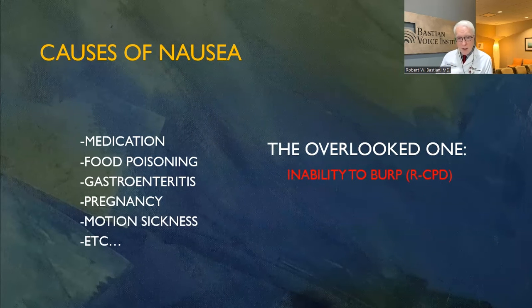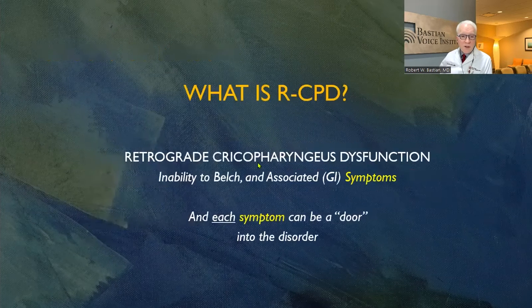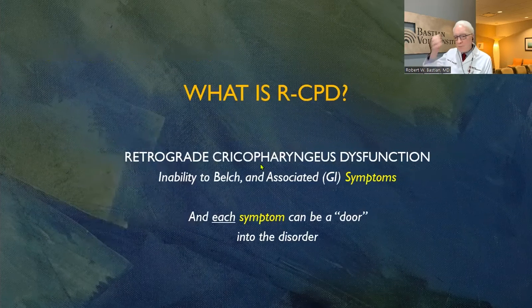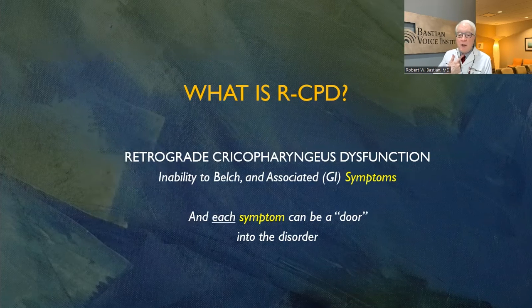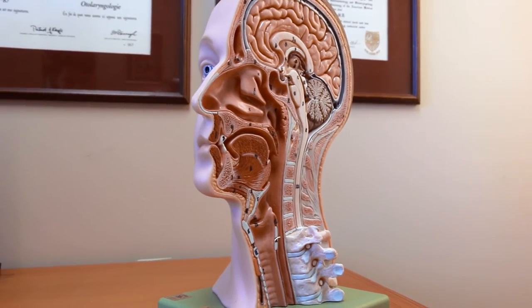Why am I nauseated so much? There is an overlooked cause of nausea right here: the inability to burp, or RCPD. What is RCPD? It stands for retrograde cricopharyngeus dysfunction. The cricopharyngeus muscle is right here in the neck — it's the upper esophageal sphincter.